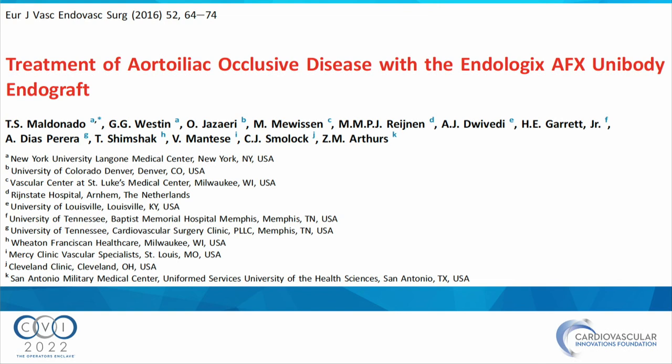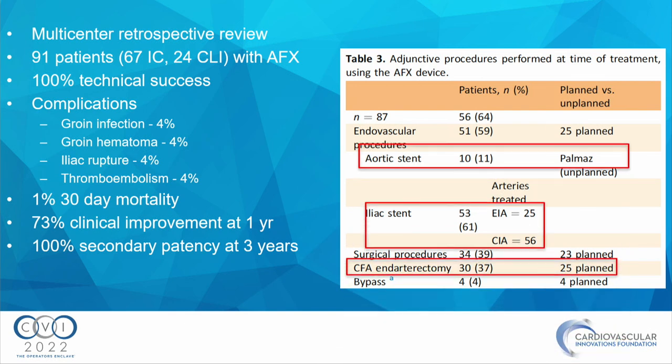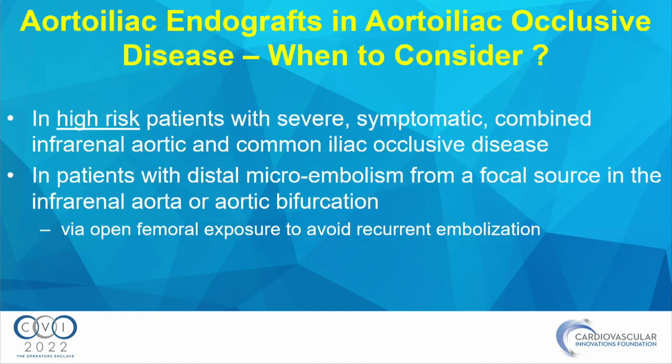The largest multi-site series of AFX unigrafts included 91 patients with 100% technical success. A fair number of these patients required an aortic stent inside the endograft, iliac stents, and femoral endarterectomy.